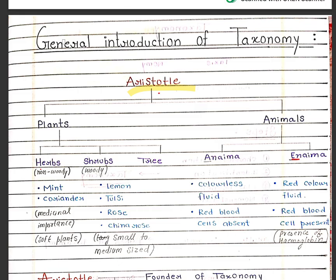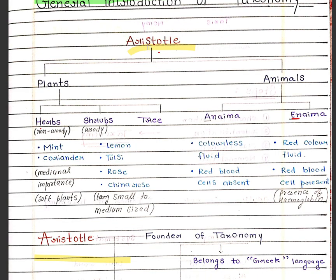General introduction to taxonomy was given by Aristotle. Aristotle divided living things into two parts: plants and animals. Plants were divided into three parts — herbs, shrubs and trees. Herbs are non-woody plants and trees are large plants.